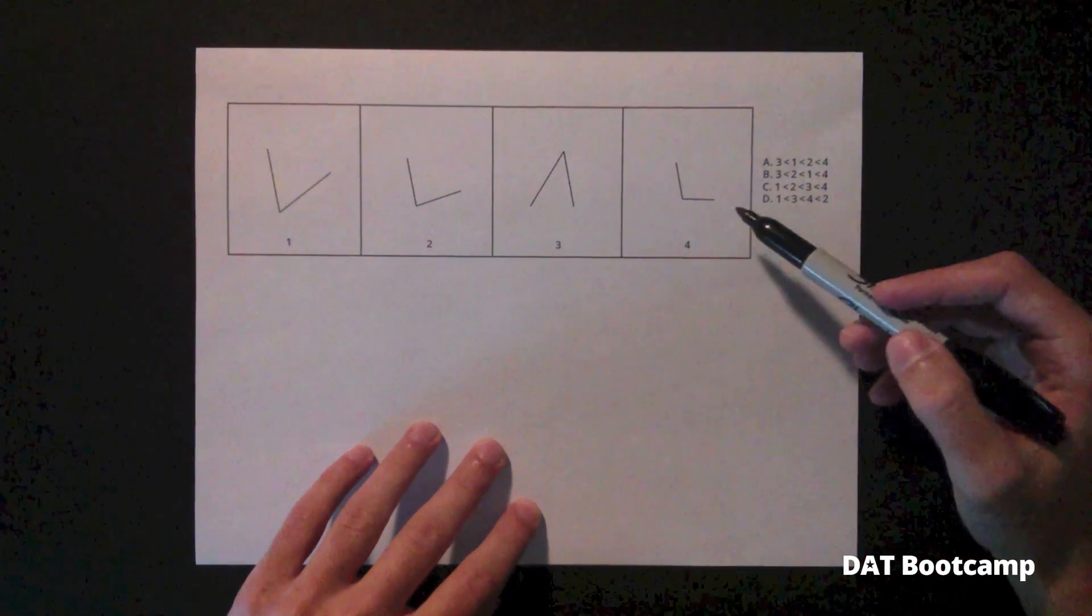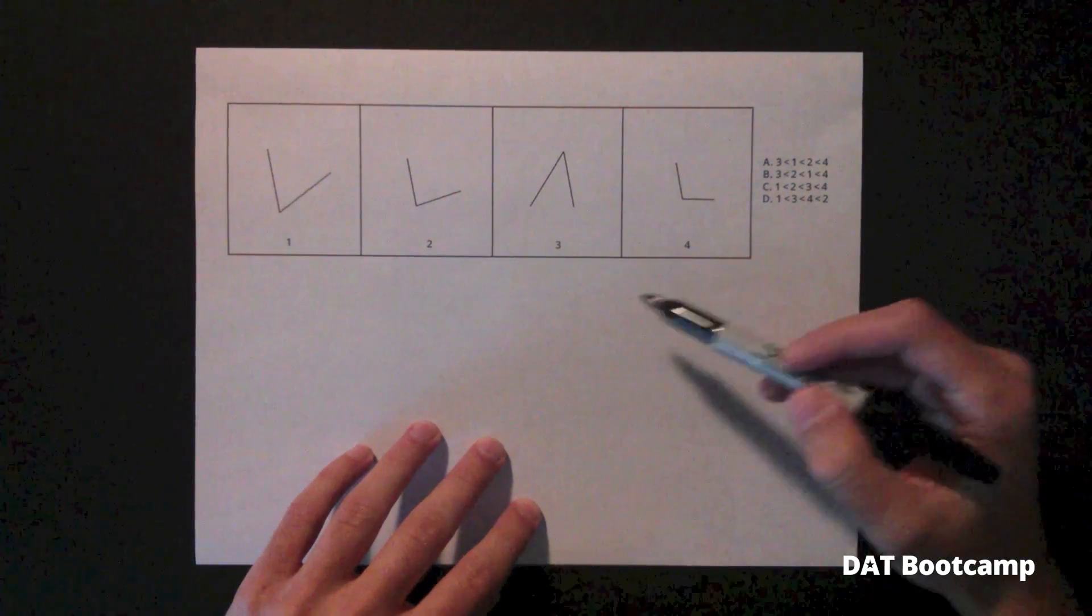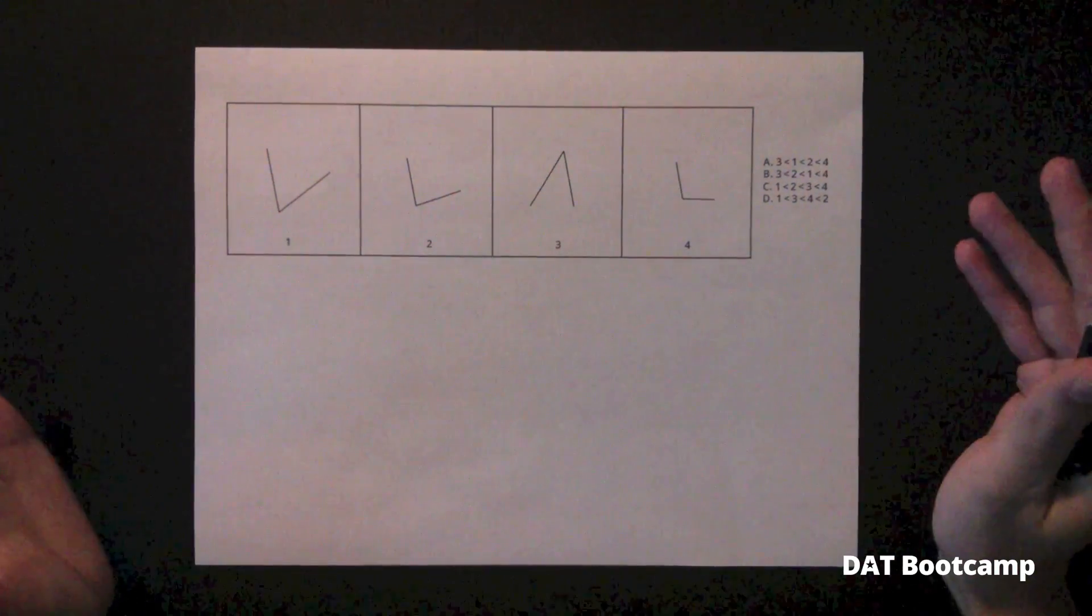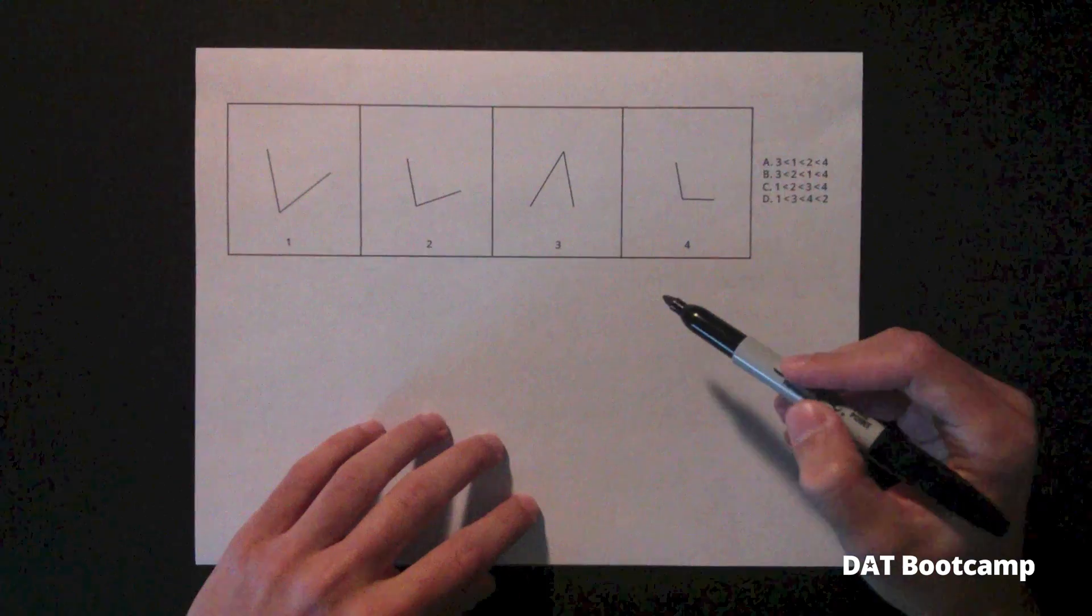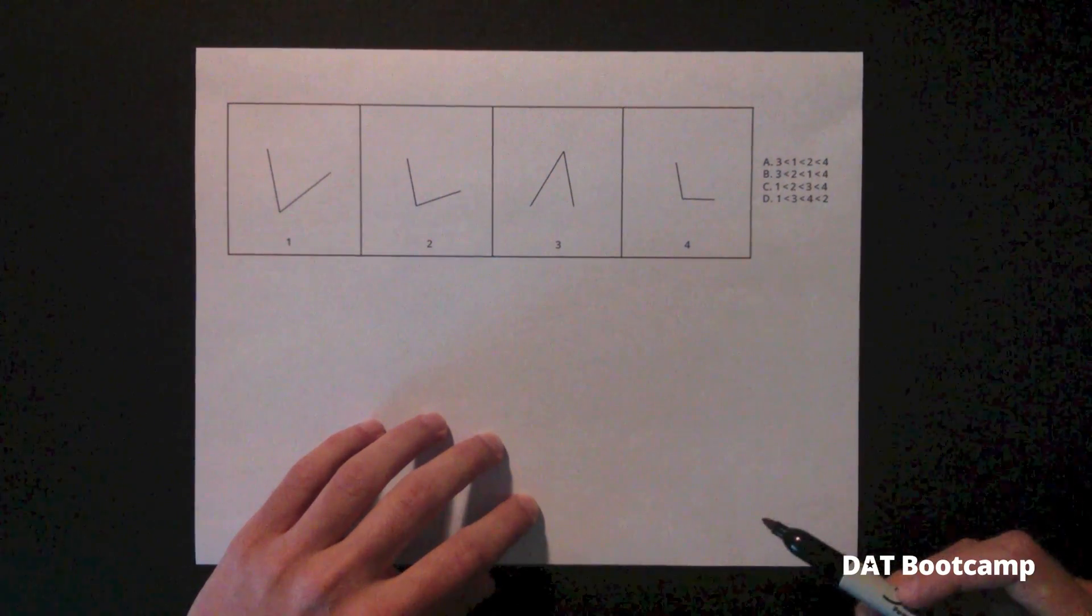To start, we're going to do this example problem. This is a pretty easy problem. You probably won't see this on the DAT because the angles are pretty widespread. On the DAT, the angles will probably be separated by somewhere between four to five degrees each.